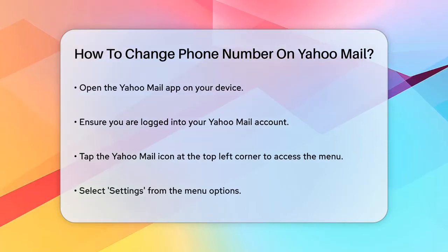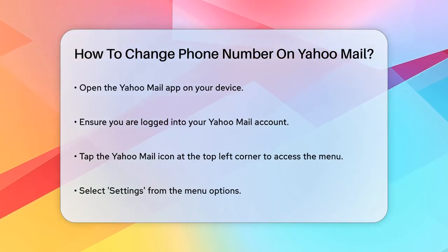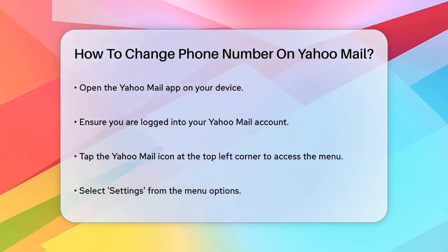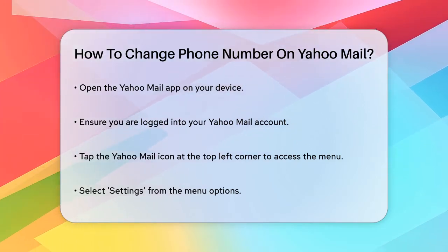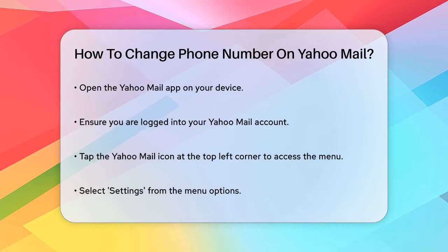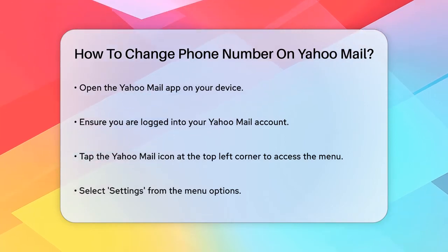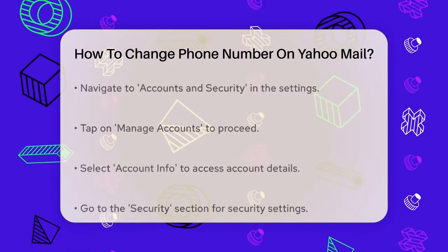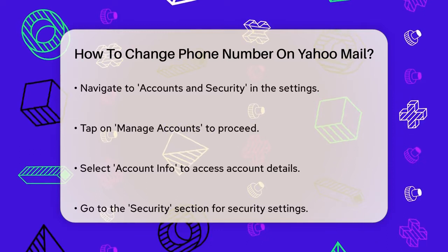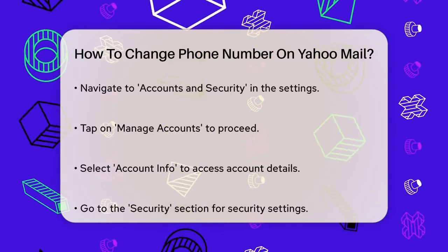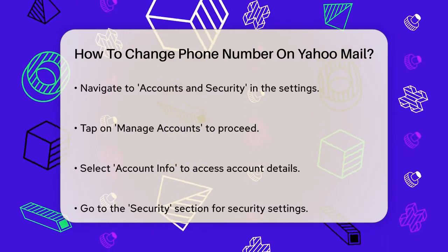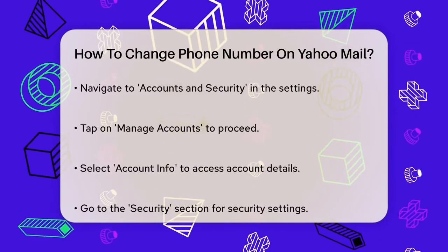Once you're in, tap on the Yahoo Mail icon at the top left corner of the screen. This will open up an expanded menu. In this menu, tap on Settings, then navigate to Accounts and Security. Here, you'll find the option to Manage Accounts. Tap on this and then select Account Info.